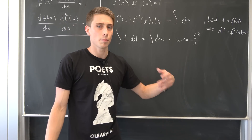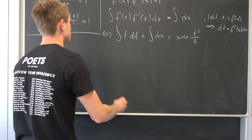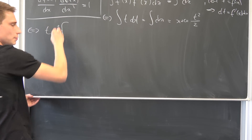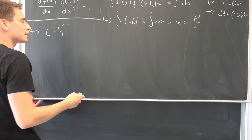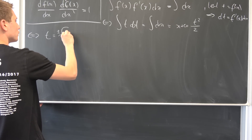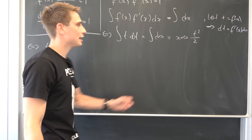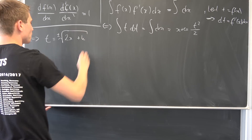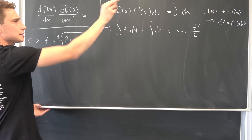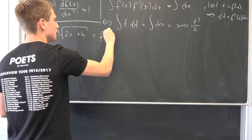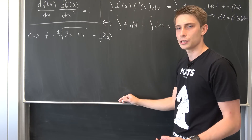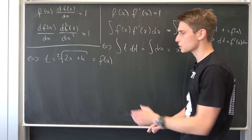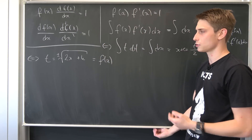Now we multiply both sides by 2 and take the square root — don't forget the plus or minus, that's important. We get t equals plus or minus the square root of 2x plus k, where k is a new constant absorbing 2c. And t is just our function f(x).